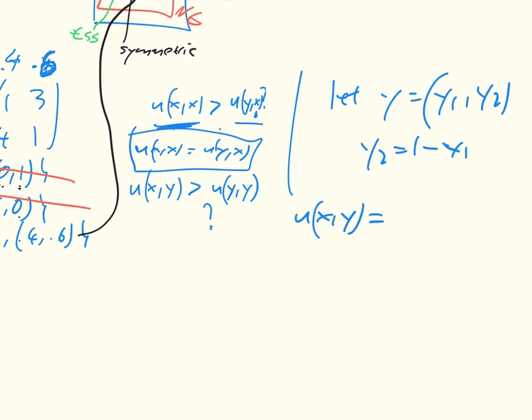Let me calculate what u of x,y is equal to. And remember, x is 0.4, 0.6. We just go through the algebra and we get that this is equal to y1 plus 1.8. And we can also calculate u of y,y, and we get that that's equal to 5y1 minus 5y1 squared plus 1. So that's just plugging in the numbers,